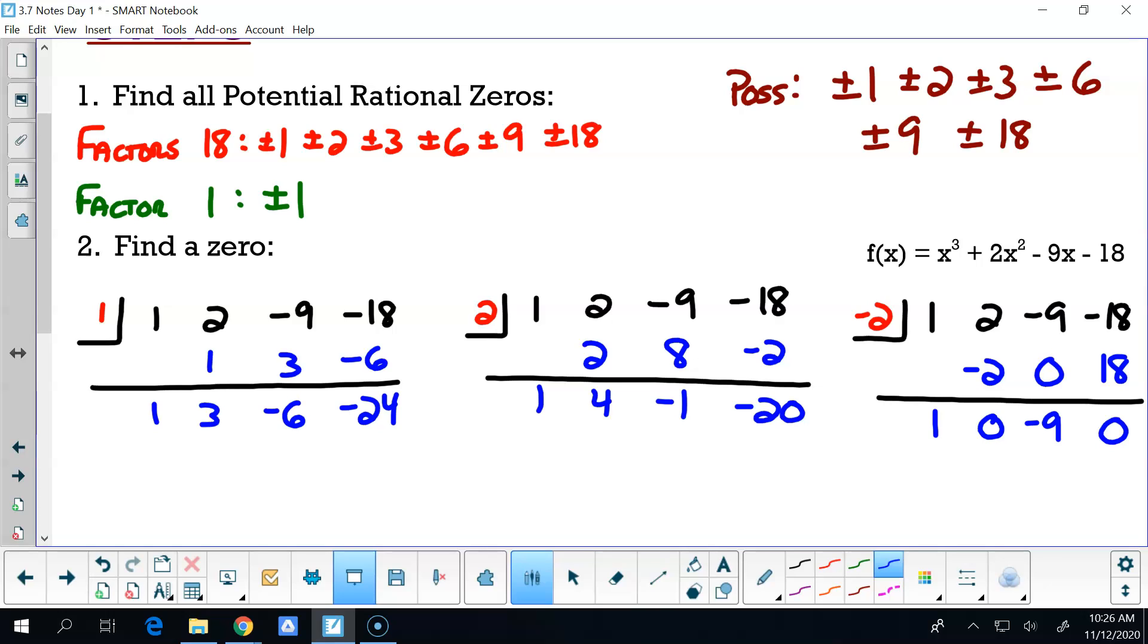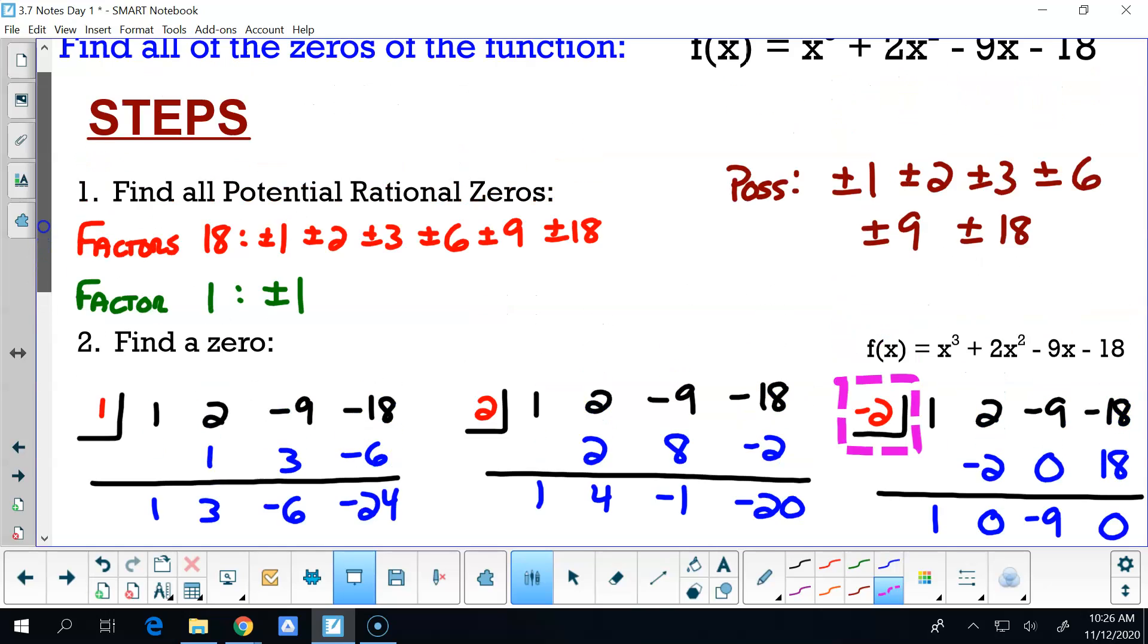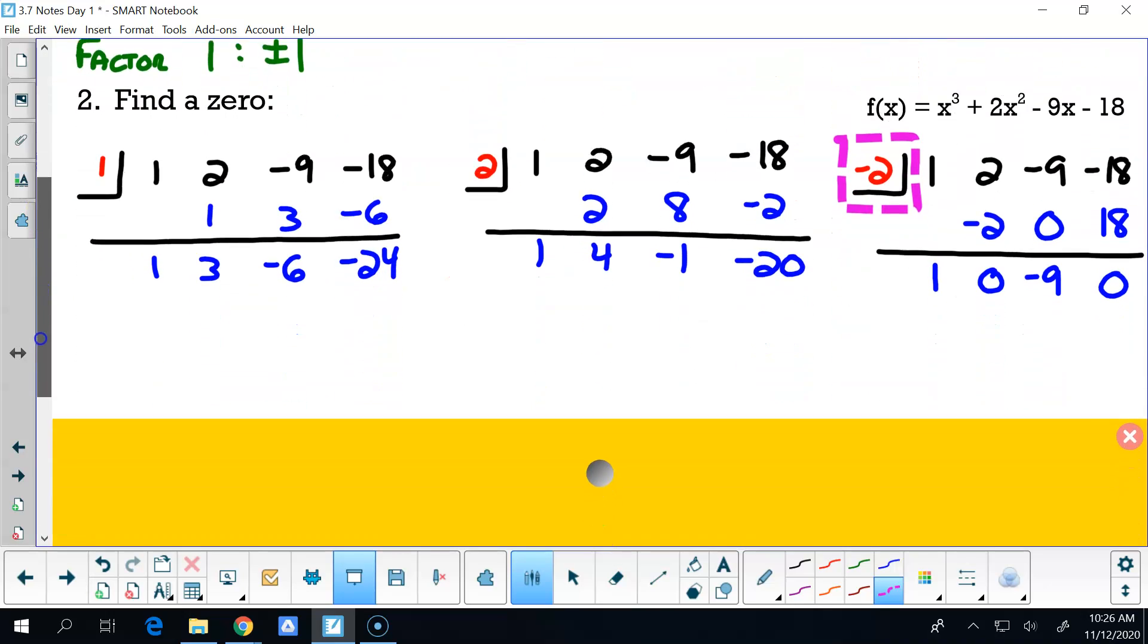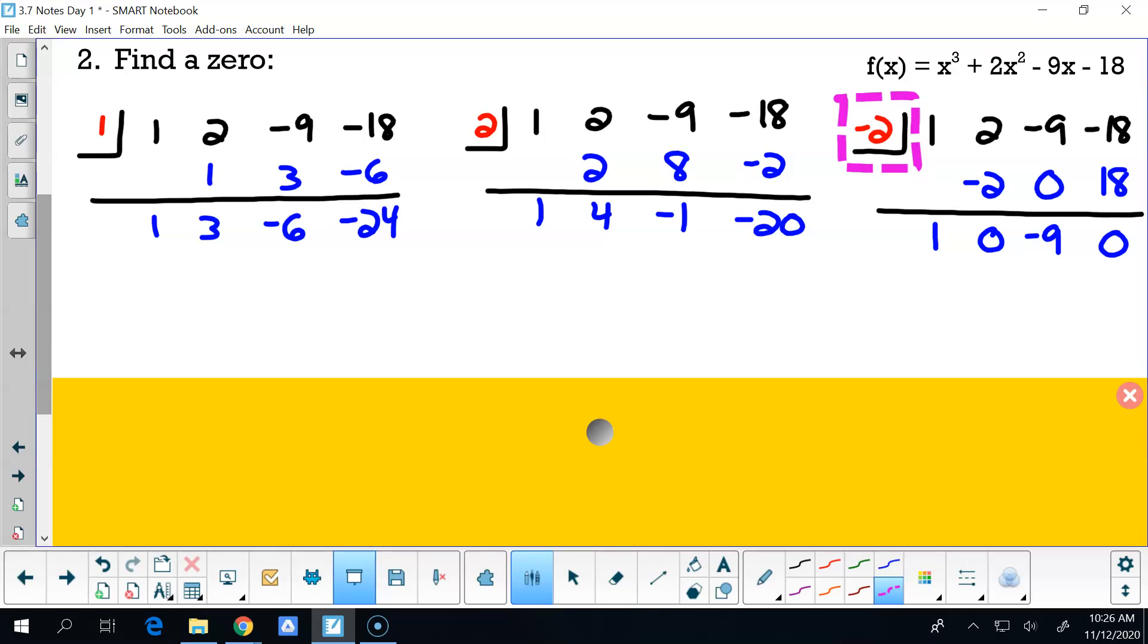So if I'm thinking of this now, negative 2 is a zero, and I'm going to put a big old circle around it on my paper because that's one of my answers. How many answers do I have to get in this particular one? Three of them, right? So we found one. Love it.